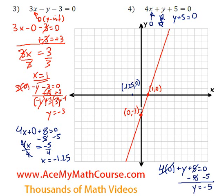Great, so that is the y-intercept. Right here. 0 comma negative 5. Excellent. Then let's just draw a straight line right here.